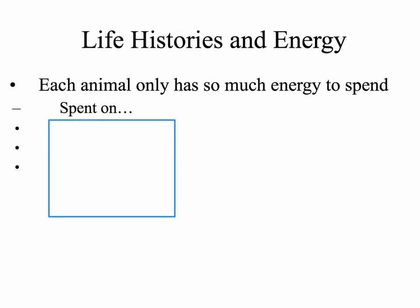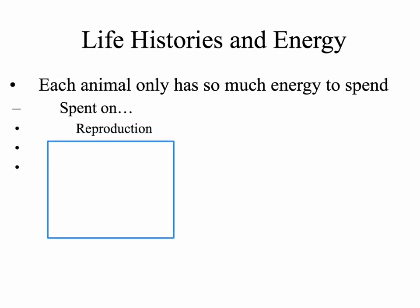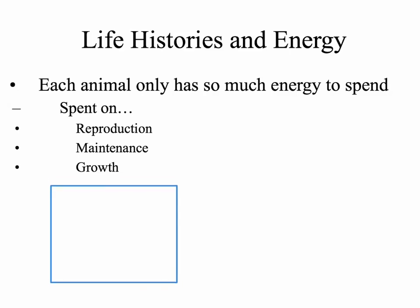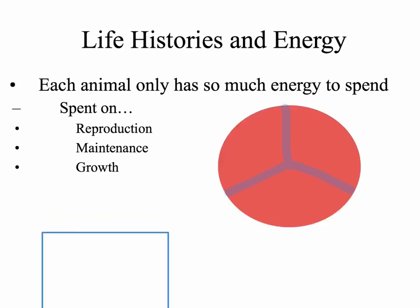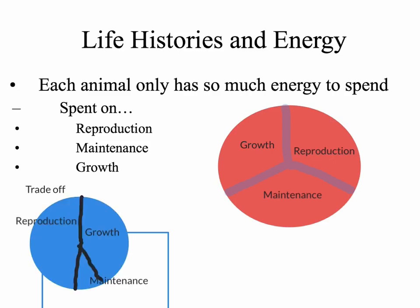Life histories have to do with division of energy and trade-offs in an organism's life. Each animal has only so much energy to spend during its lifetime. In general, energy can be spent on reproduction, maintenance, or growth. We can visualize an organism's energy using a pie chart. Each organism has only so much energy to spend, and it has to divide its energy between reproduction, maintenance, and growth. Life is all about trade-offs, and we're going to see that these different life history strategies divide up this pie chart in different ways.